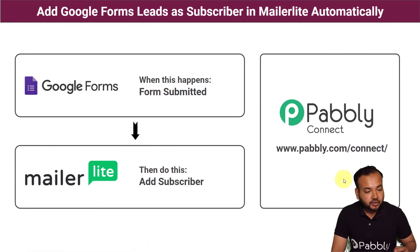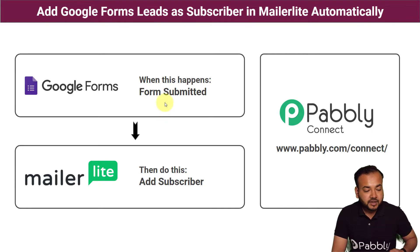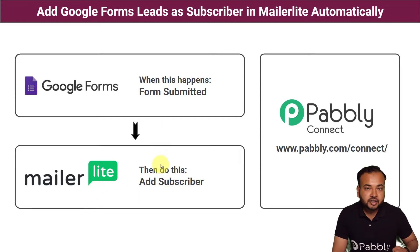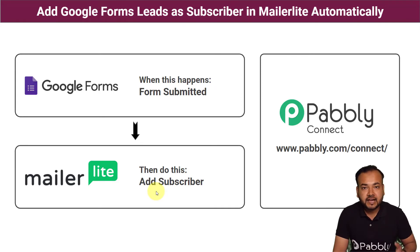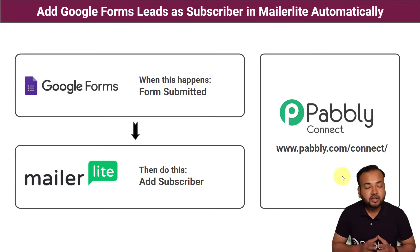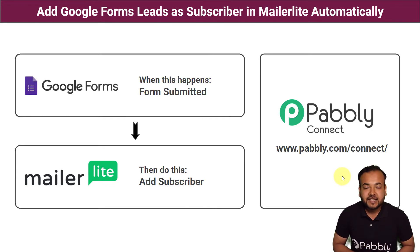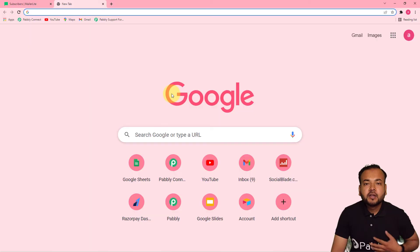The flow of this automation is going to look like this: when any of your leads or contacts submit a form that you have created with Google Forms, the same person who filled this form is going to be added as a subscriber in MailerLite. This automation saves your time in manually collecting lead data and adding those leads one by one into your email marketing tool, improving your efficiency and productivity. To make this happen, we are using Pavli Connect, which is an integration and automation tool, and the best part is you will not require any coding skills or programming knowledge.